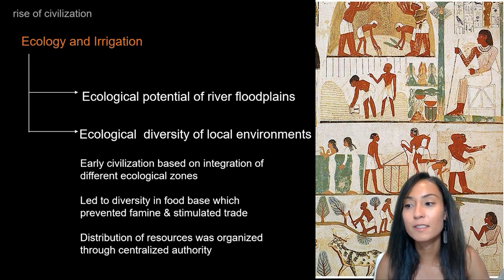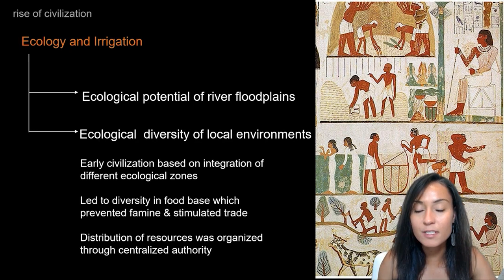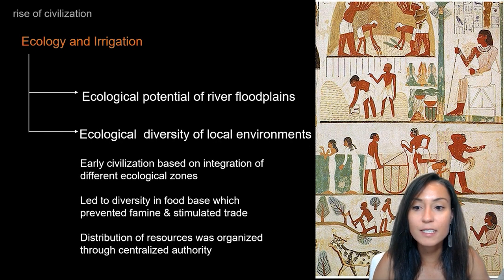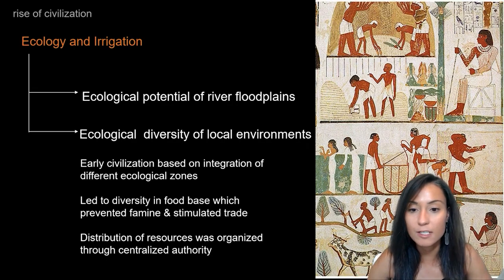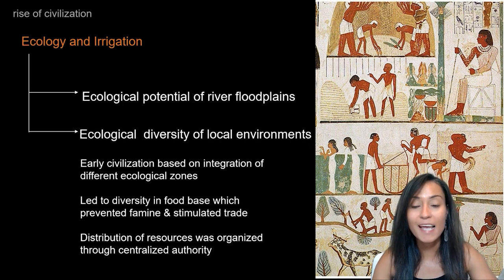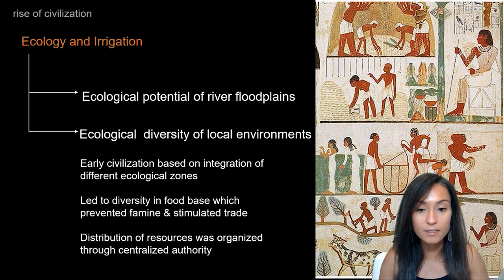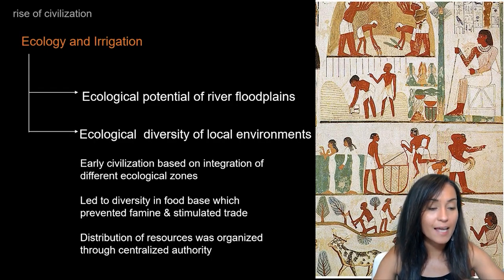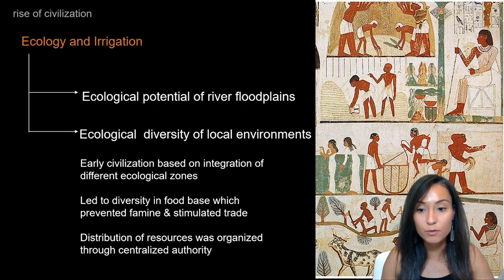The other core part of these ecological theories is that there was a diversity of local environments where these major city-states emerged. The argument is that the earliest civilizations were based on complex subsistence patterns that integrated multiple different ecological zones, resulting in a diversity of food resources that protected people against famine and stimulated trade for food and other products. This complex integrative subsistence system was also linked to the growth of a distributive set of organizations that encouraged centralized authority and subsidiary organizations tasked with redistributing essential foodstuffs and access to natural resources like water.